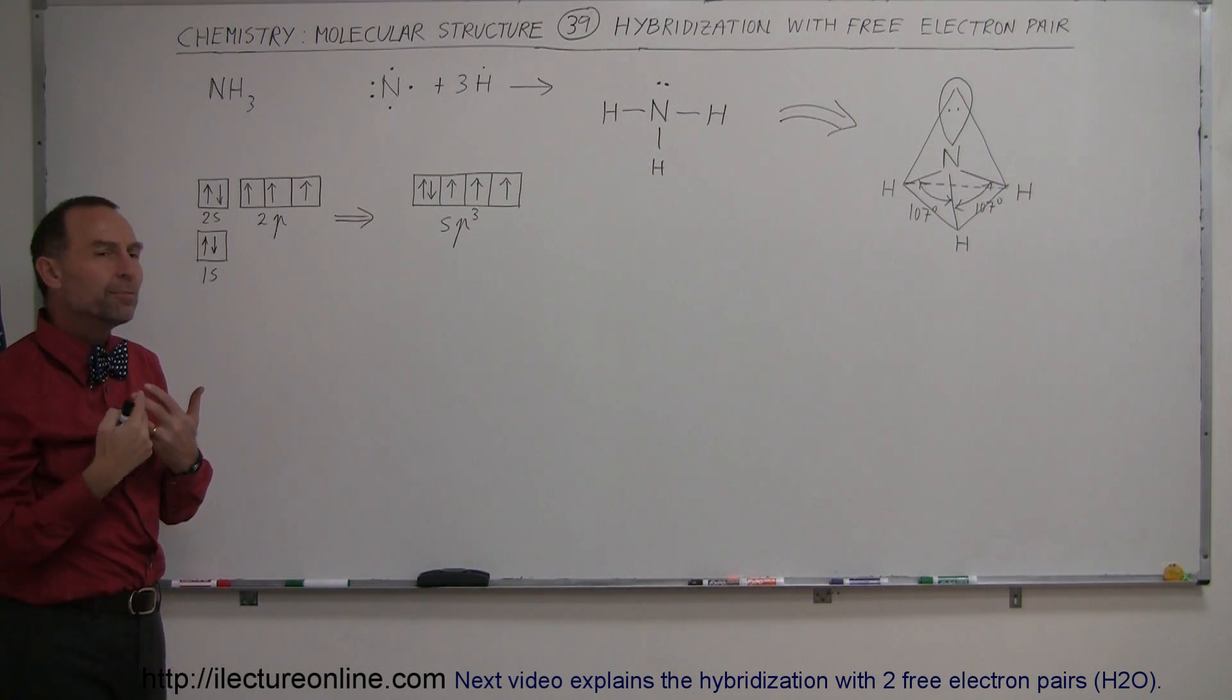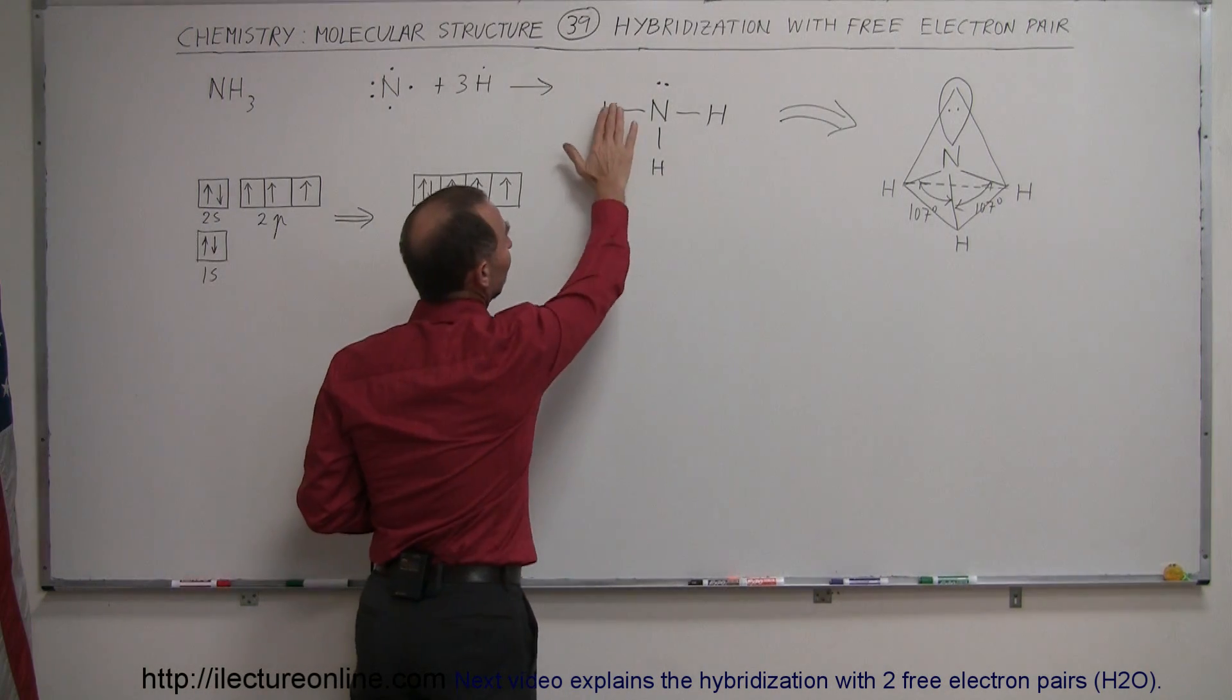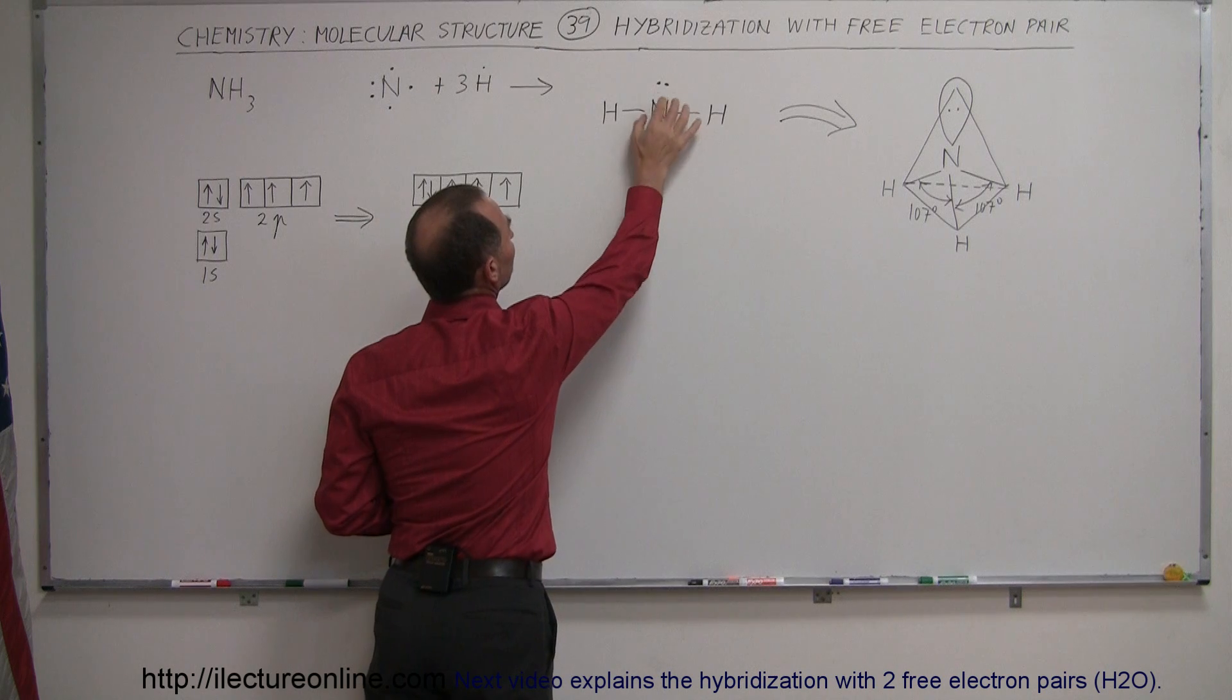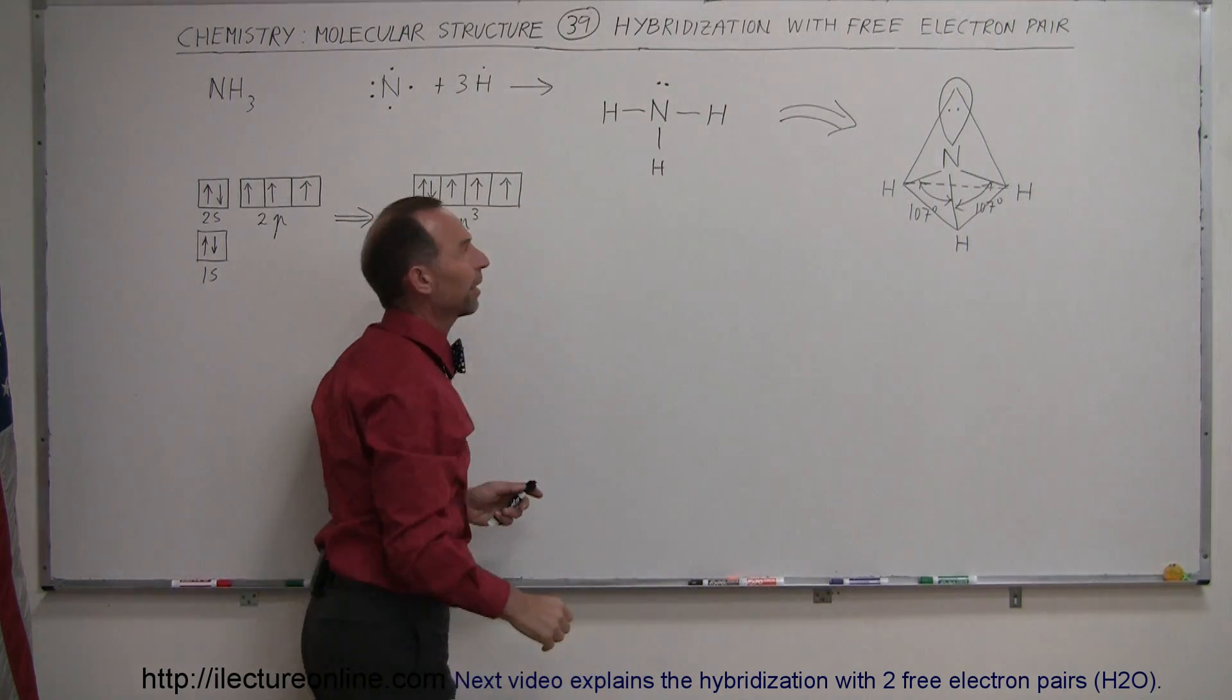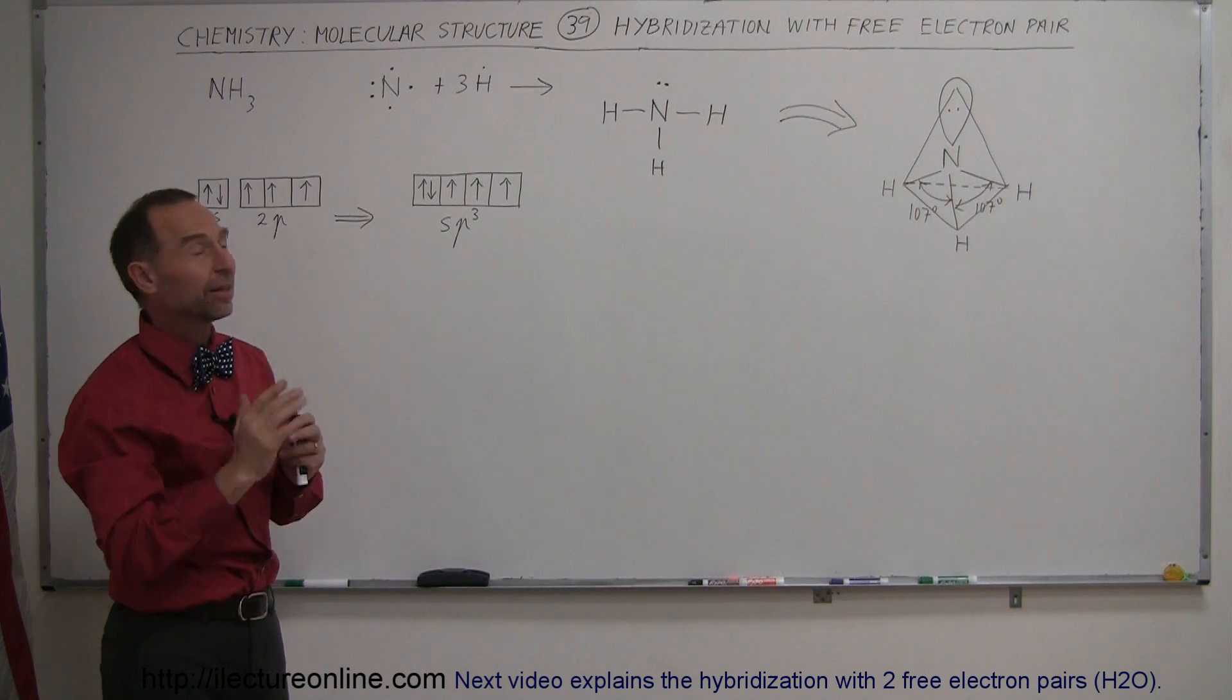And how does an ammonia atom look like? Well, the Lewis structure would indicate that it looks like this. We have the three hydrogens connected to nitrogen with one free electron pair there, and it gives you the impression that it's kind of a planar molecule, which is not at all the case.